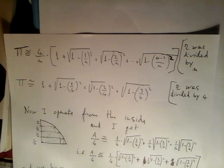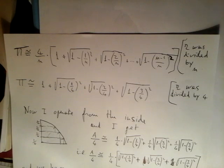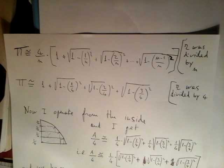And if we divide r by n instead of 4, as we did, we get pi over 4 equals approximately 1 over n times square bracket: square root of 1 minus 1 over n squared, plus square root of 1 minus 2 over n squared, plus, at the end, square root of 1 minus n minus 1 over n squared.